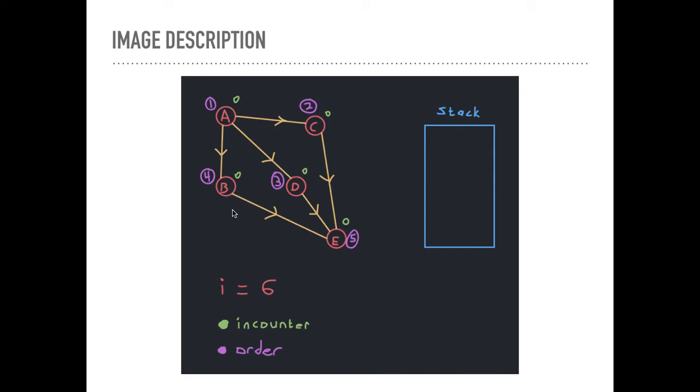There's 1, 2, 3, 4, 5 vertices, where n is the number of vertices. I might have failed to mention that. Well, if i is greater than that, 6 is greater than 5. So we're going to return a topological ordering, which is just the numbers that we've assigned to these.